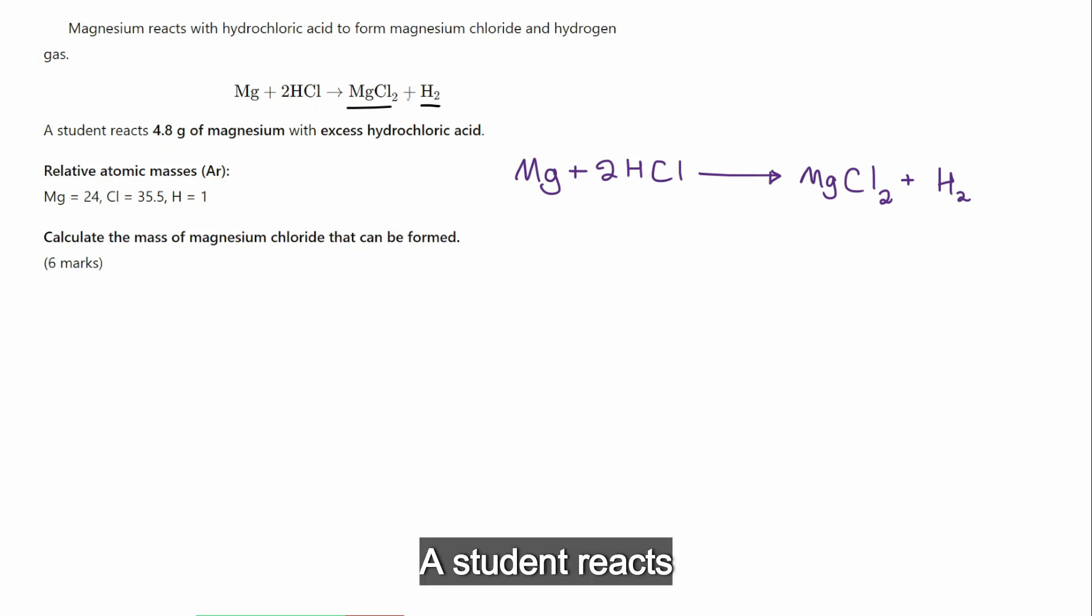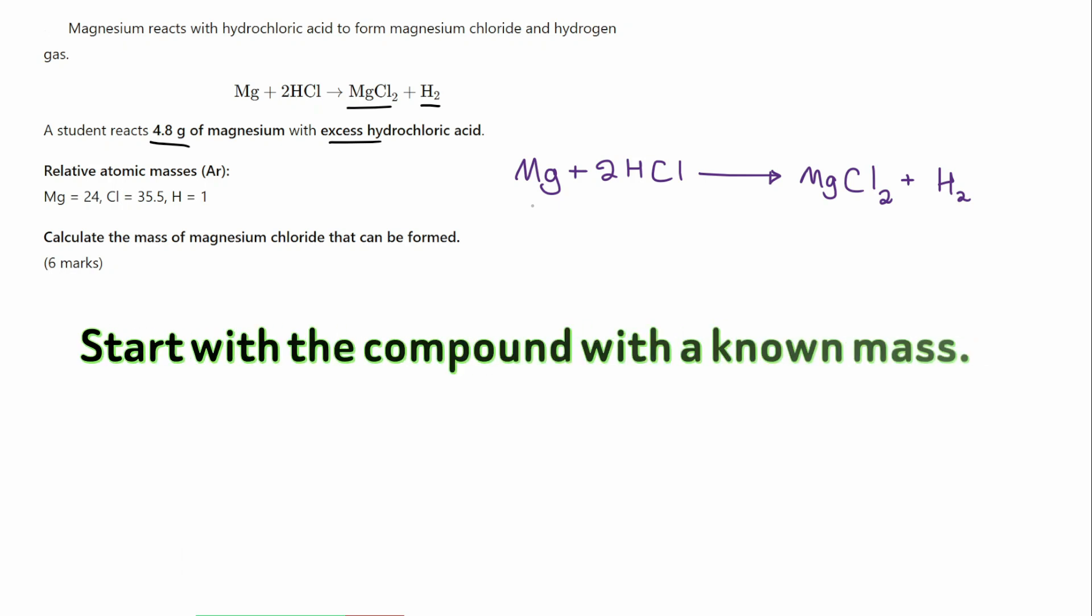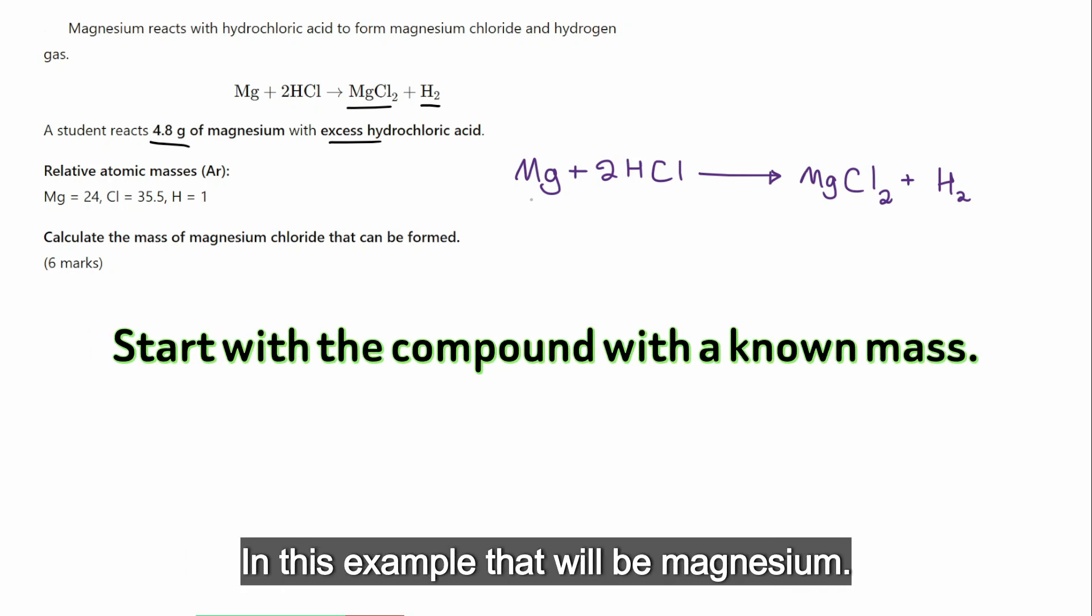A student reacts 4.8 grams of magnesium with excess hydrochloric acid. Okay. Now, questions like this, we always need to start with the one that we already know. In this example, that will be magnesium.